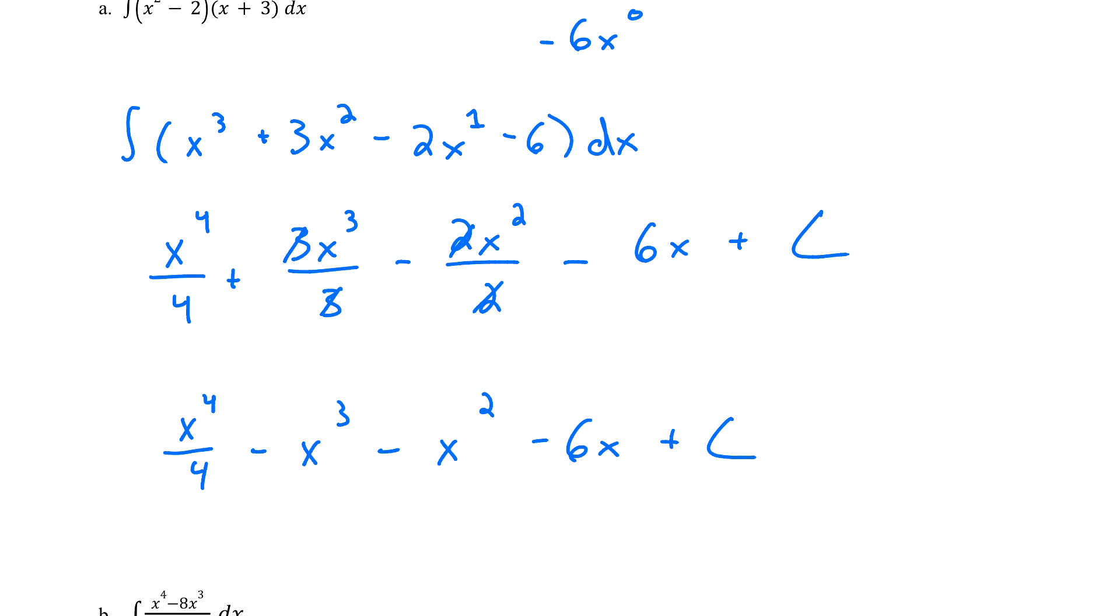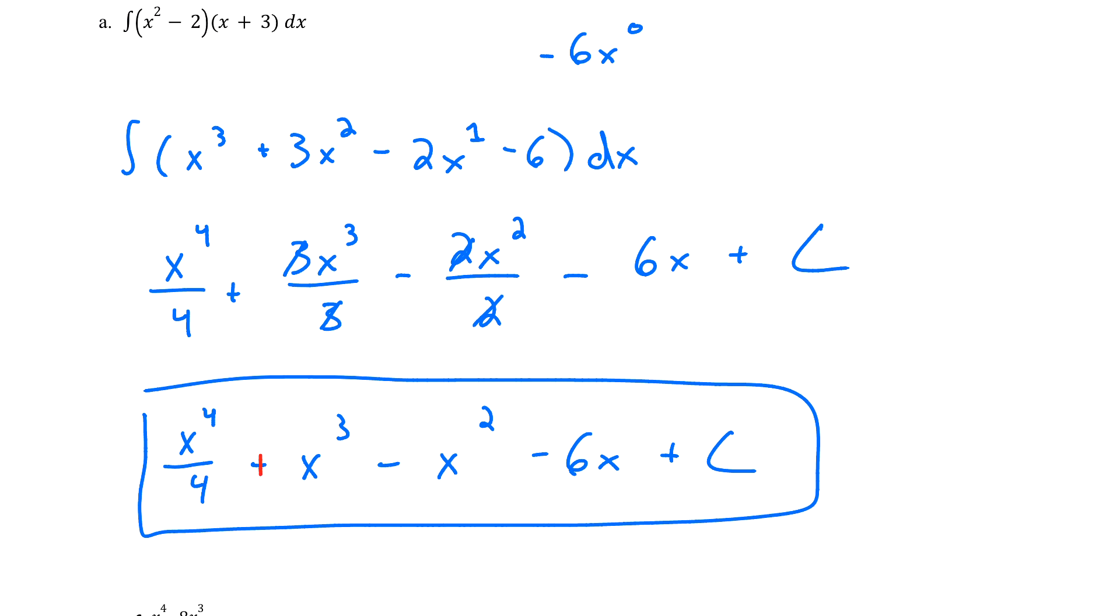This is x⁴/4 - x³ - x² - 6x + c. Oops, I got a sign mistake there. This should be plus x³. And that is our solution. So if we have multiplication and we can, we definitely want to go ahead and foil that out before we integrate. And then once we've simplified it, we can integrate just like we've been doing all along in this section.